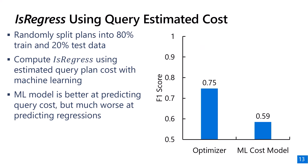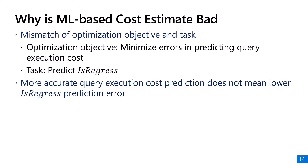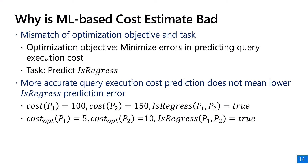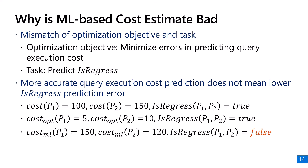Our key observation is that there is a mismatch between the optimization objective and the prediction task. In training, the model minimizes errors in predicting query execution cost. In testing, the model is used to check if one query plan is more expensive than another. For example, given P1 with cost 100 and P2 with cost 150, the query optimizer estimates P1 at 5 and P2 at 10, correctly flagging a regression. The model estimates P1 at 150 and P2 at 120 — more accurate in cost estimation, but making the wrong regression prediction.